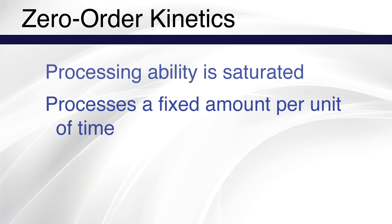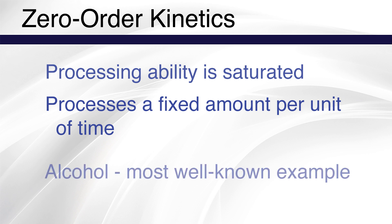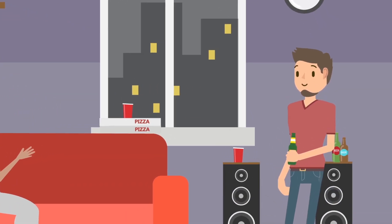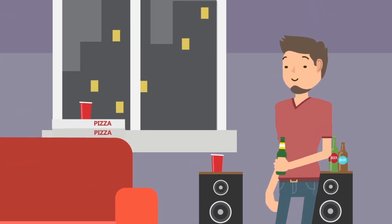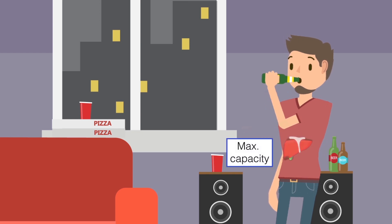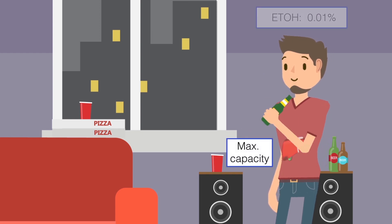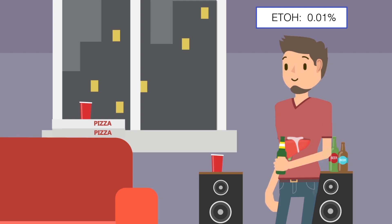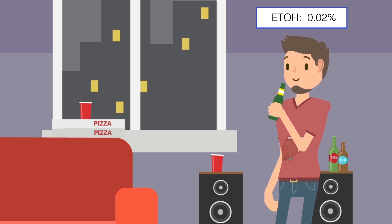The most well-known drug that undergoes zero-order kinetics is alcohol. So let's imagine that a person has been drinking at a party. After just a few drinks, the alcohol dehydrogenase enzymes in the liver are already working at maximum capacity.